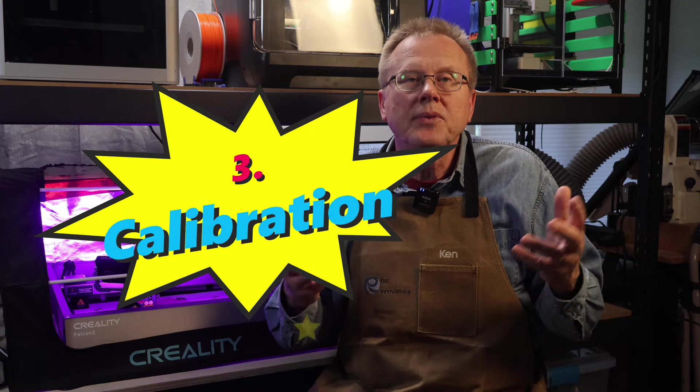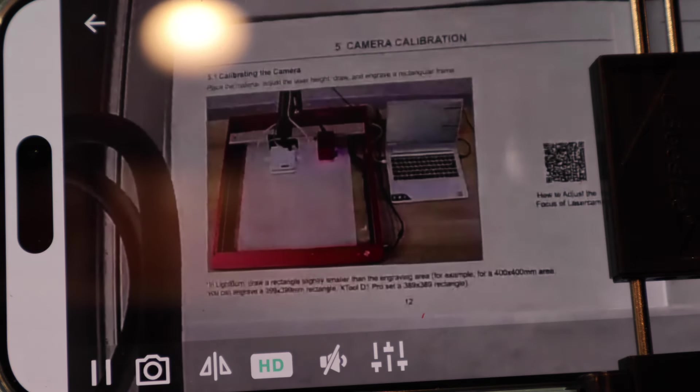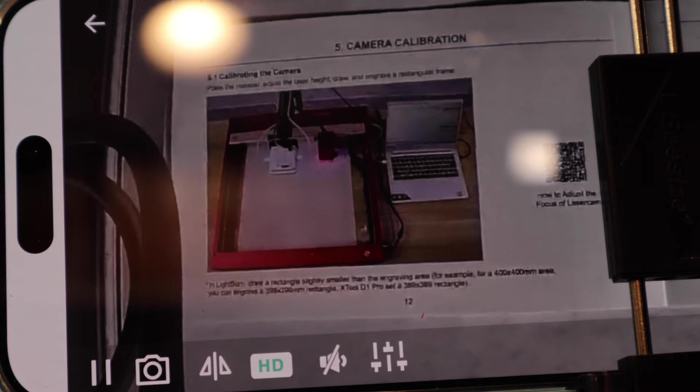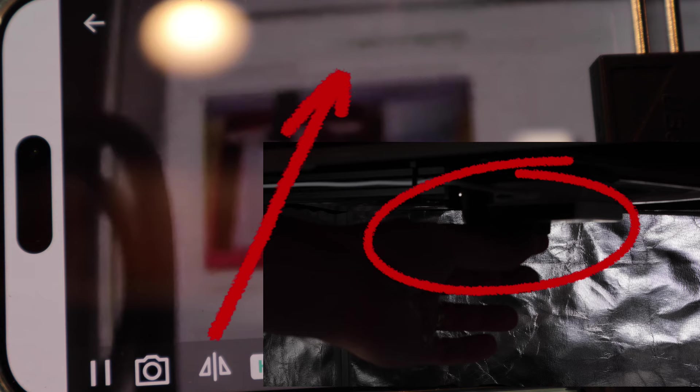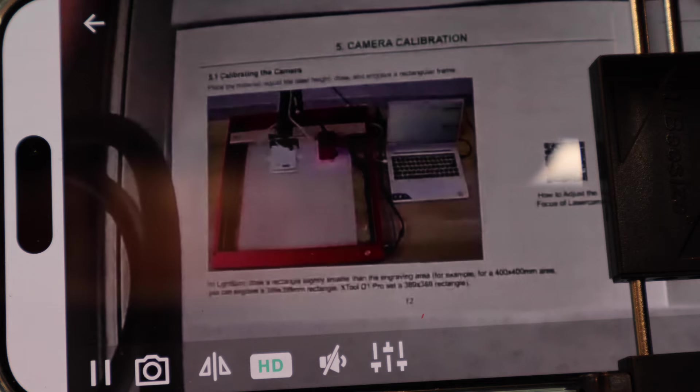Now, it's time for calibration. First, let's focus the camera. Place an object in the engraving area. Then open the Beagle Engrave app on your phone and switch to the full screen and HD for the best quality. Turn the focus ring on the camera and observe the quality of the image. Continue to turn the focus ring until the image is sharp. Then continue to turn it until you see the image get blurry and then turn it back to the sharp image. And that's it.